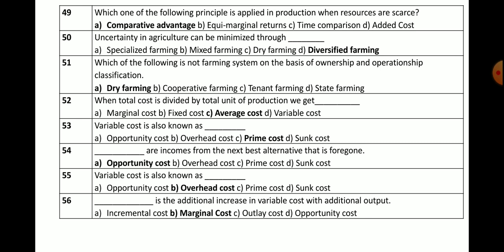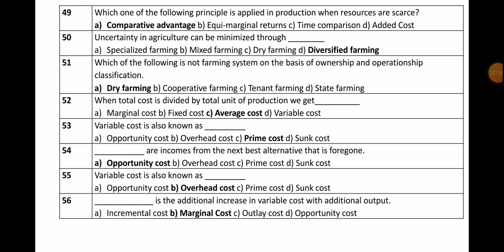Question number 55: Fixed cost is also known as — options: opportunity cost, overhead cost, prime cost, or sunk cost. The correct answer is overhead cost. Note: there is a correction here — overhead cost means fixed cost, while prime cost means variable cost. So fixed cost is also known as overhead cost.